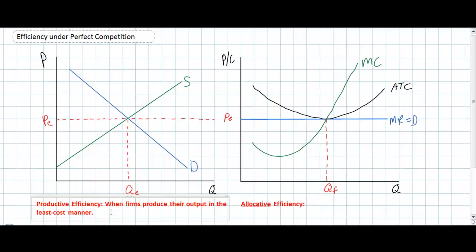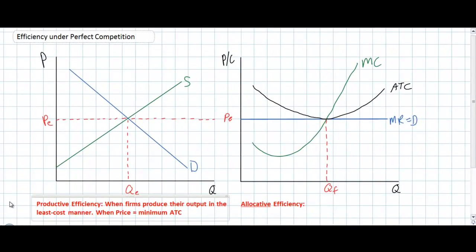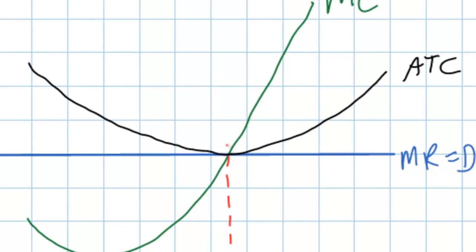In order to remain competitive, firms must achieve their minimum average total cost. To determine whether a firm is achieving productive efficiency, we must ask: does the price of the firm's product equal the firm's minimum average total cost? When looking at a perfectly competitive firm in its long-run equilibrium, we can see that price does equal minimum average total cost. At the MC equals MR point — the profit maximizing level of output — the price is equal to the minimum average total cost.